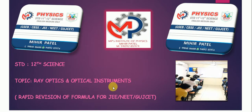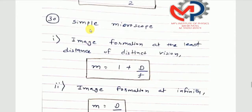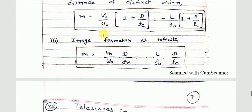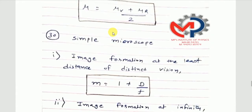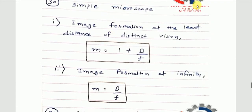Welcome back to the final session of this particular chapter. The next concept is about optical instruments. When we talk about optical instruments, we will discuss the simple microscope, compound microscope, and different types of telescopes. So first, let's discuss the concept of microscope.